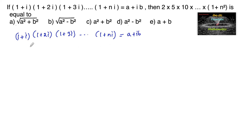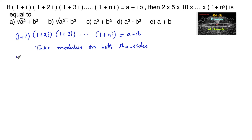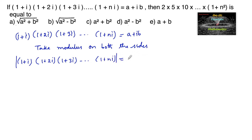Let us apply modulus on both sides. So we have modulus of (1+i)(1+2i)(1+3i)·...·(1+ni), which is equal to modulus of a+ib.